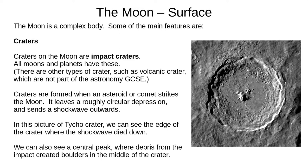An impact usually leaves a circular depression. The asteroid or comet is much smaller than the crater, but the impact sends a shockwave outwards, pushing rock and dust to the sides, and leaving a mountainous ridge where the shockwave dies down. We can see this in this picture of Tycho Crater, where we can also see debris from the impact in the middle of the crater. The Moon does have a few elliptical craters, where the impact came in at a steep angle, but usually the circular shockwave wipes out the ellipse.